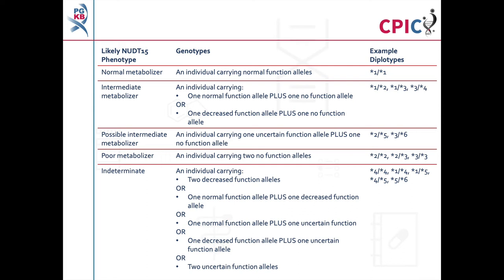Gene information tables for NUDT15, including a diplotype-phenotype table, are also available on the PharmGKB website. A link to the NUDT15 gene information tables is given in the description below this video. Note that the functional status of some TPMT and NUDT15 haplotypes have not yet been characterised. These are listed as having an unknown effect on function and should be interpreted with caution. An important caveat is that a normal function status is given to all alleles which are not detected in the assay.